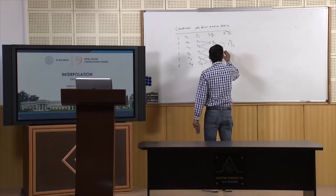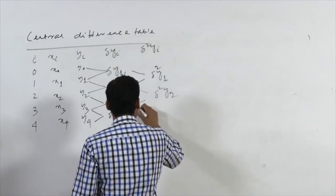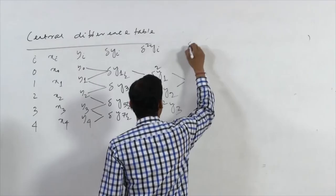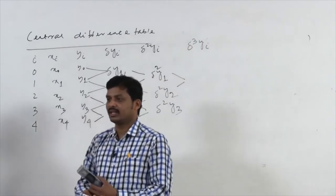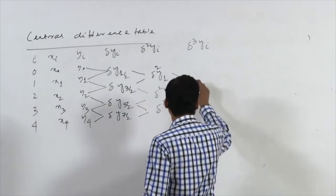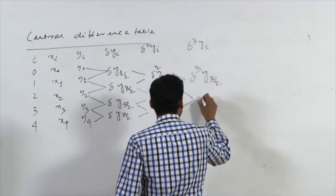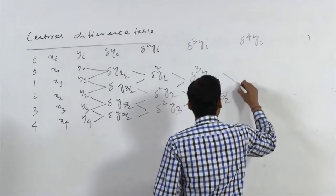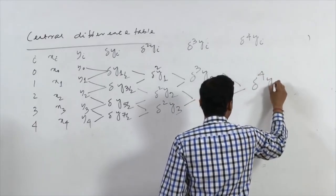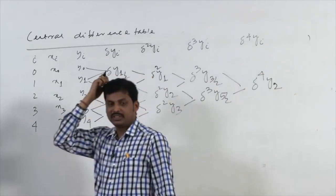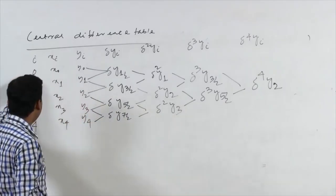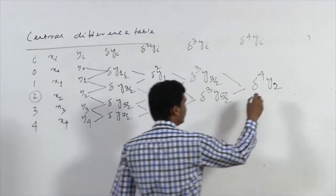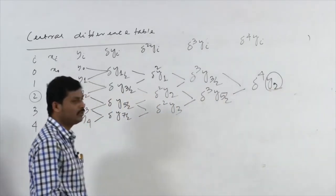Similarly, the difference of those two gives delta squared y3, and taking one more difference gives delta cubed of yi, written as delta cubed y(3/2) and delta cubed y(5/2). Taking yet another difference gives delta to the power 4 of yi, written as delta^4 y2. In the central difference form, the values 0, 1, 2, 3, 4 are associated with the table and the central value is 2. Therefore, the central difference approximates the value at the center of the table only.